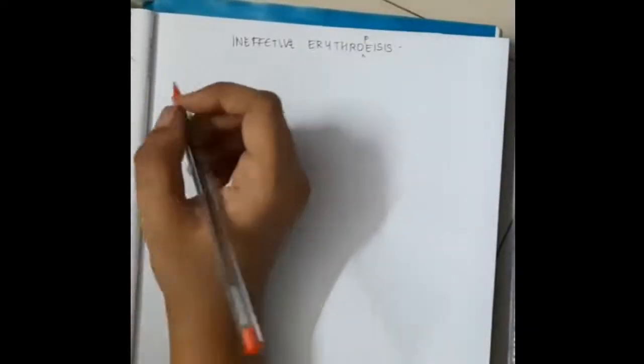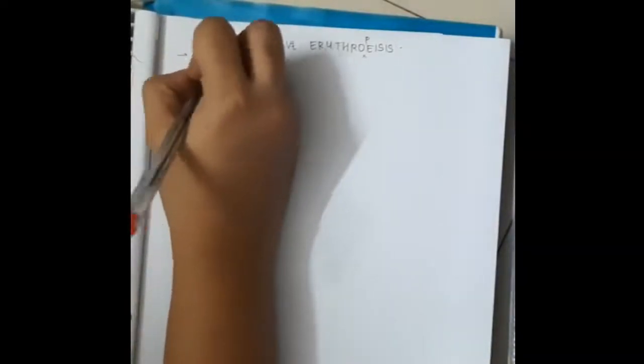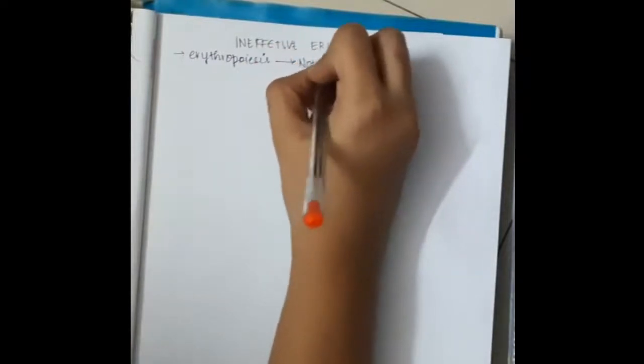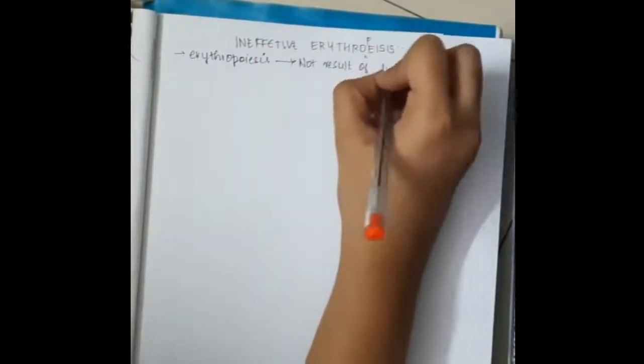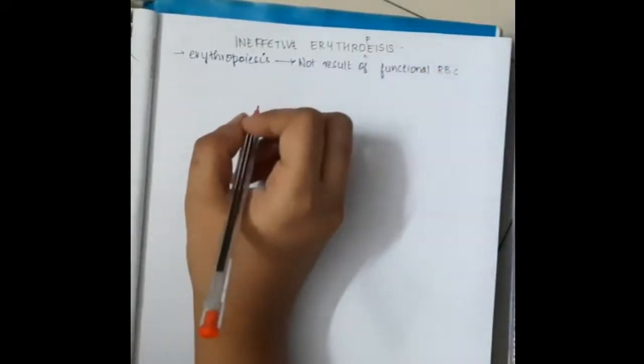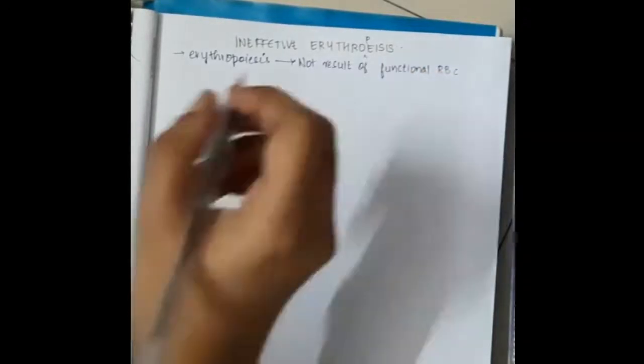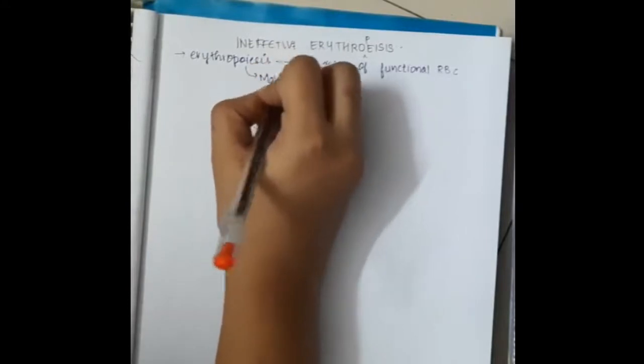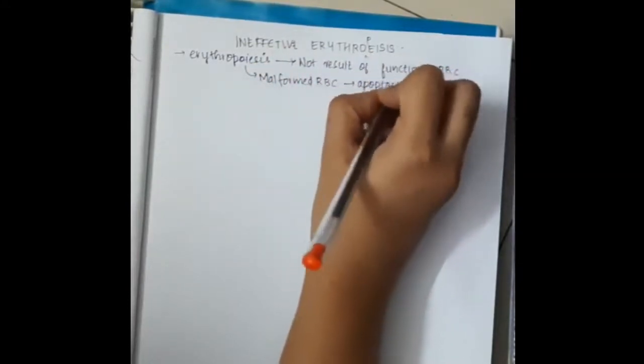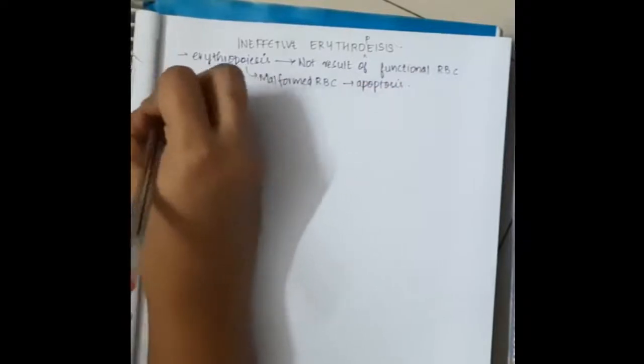Erythropoiesis is the production or process of synthesis of RBC. If the erythropoiesis does not occur properly, this leads to non-functional RBC or can cause malformed RBC. If it causes the formation of malformed RBC, these will undergo apoptosis and die.